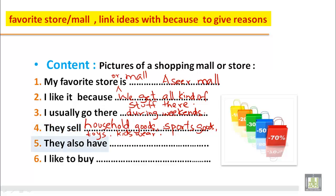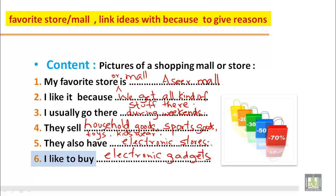They also have electronic stores where you can buy electronic goods. I like to buy electronic gadgets and clothes. So when you want to write a paragraph about any mall or store, build up your ideas: the name of the mall, why you like it, when you go there, what items they sell, what extra things are available, and what things you buy.